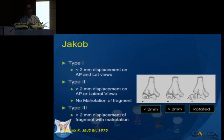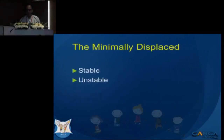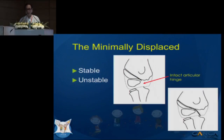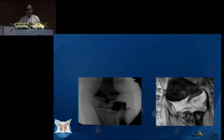Jacob's classification gave insight into how to treat these fractures: the less displaced ones could be treated conservatively and the more displaced ones needed operative intervention. For minimally displaced fractures, we need to check whether the fracture line reaches the articular cartilage or articular surface, or whether it is an incomplete fracture. The stable ones do not reach the articular surface, while the unstable ones do. You can further assess this by doing an arthrogram or MRI.